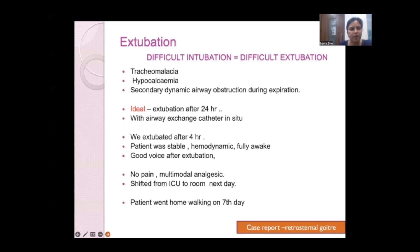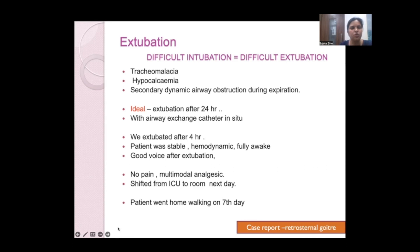Difficult intubation dictates careful extubation planning. Expected extubation difficulties included tracheomalacia, hyperkalemia, and secondary airway obstruction during expiration. Ideally, the patient should be extubated after 24 hours with an airway exchange catheter in situ. However, the surgical team was confident that with less tracheal handling intraoperatively and the dynamic obstruction now removed, front-of-neck access could be secured post-extubation. The patient was extubated after four hours. She was hemodynamically stable, fully awake, and had a good voice — confirming no recurrent laryngeal nerve injury. Pain was managed with multimodal analgesia. She was shifted to ICU and discharged walking on day seven.